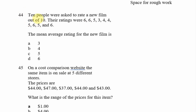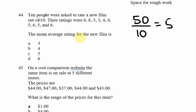Looking at question 44: 10 people were asked to rate a new film out of 10. Their ratings were 6, 6, 5, 3, 4, 4, 5, 6, 5, and 6. The mean average rating is calculated by adding all ratings and dividing by 10. Adding them up: 6+6=12, +5=17, +3=20, +4=24, +4=28, +5=33, +6=39, +5=44, +6=50. Dividing 50 by 10 gives 5. The mean average rating is 5, which is option C.